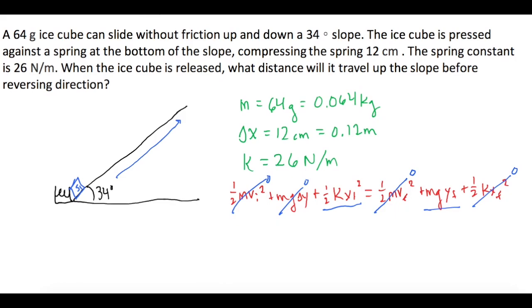So let's rewrite what we have now. So we have 1/2 kx initial squared equals mg y final. So now we want to know what the change of y is. So if we divide both sides of the equation by mg, we've isolated delta y. So 1/2 kx initial squared divided by mg equals the change in y.